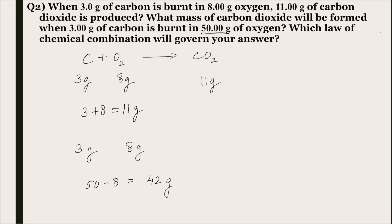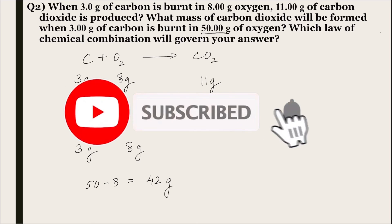according to the law of constant proportion 3 gram of carbon will combine with only 8 grams of oxygen, or it can also be said that the ratio between mass of carbon and mass of oxygen which combine to form carbon dioxide is always 3 is to 8.